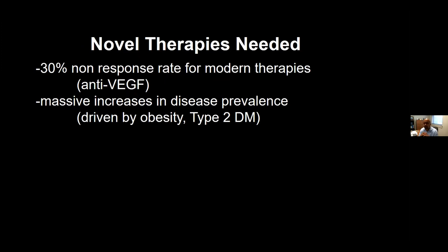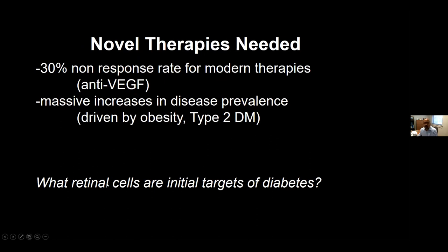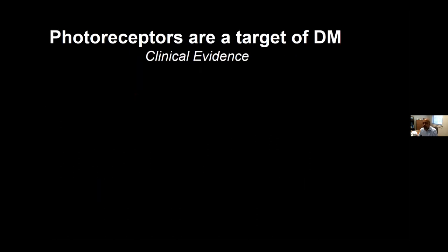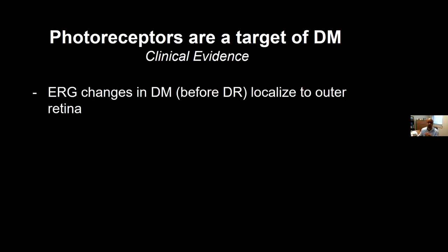Therefore there is also an increasing prevalence of diabetic retinopathy. With that said, there are needs for adjunctive medicines, and several of us in the field ask a very basic question: what cells really are affected early on in this disease? I'd like to focus on photoreceptors. Dr. Kern has been a pioneer convincing us that photoreceptors are in fact an early target of diabetic retinopathy. The sum of the clinical evidence can be boiled down to three findings: number one, electroretinographic changes in diabetes, which occur and have been known for over 70 years, many of which localize to the outer retina.